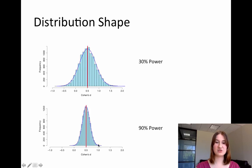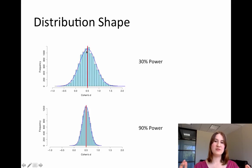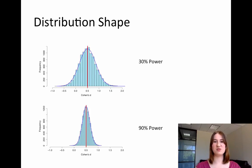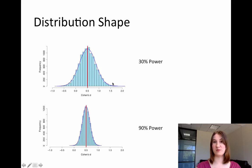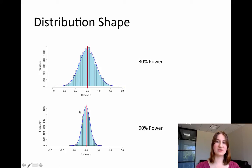Both distributions follow a normal distribution, but the spread is very different. When I have less power, the normal curve is much wider, and the range of possible effect sizes is much greater — I can get much more extreme effect sizes. When I have more power, that distribution narrows, the range of effect sizes shrinks, and I'm going to get effect sizes more centered around the true effect size.